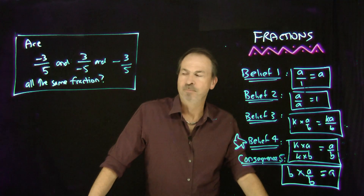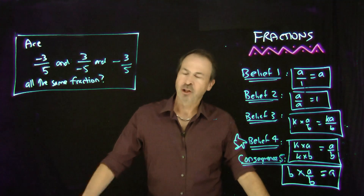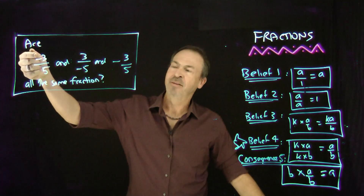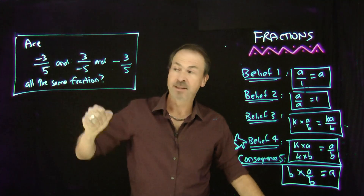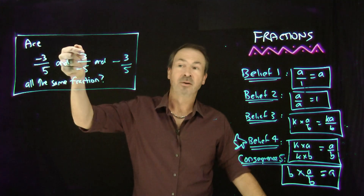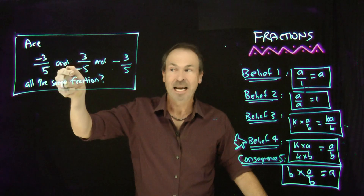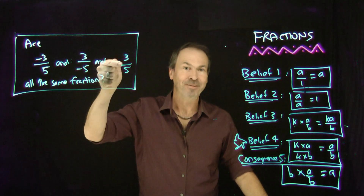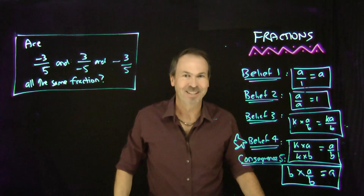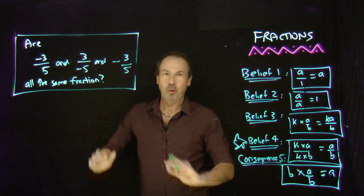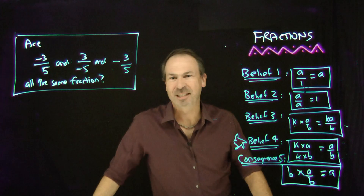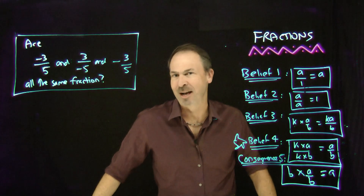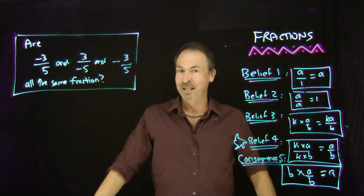Here's a question: are the fractions negative three-fifths, and three over negative five, and the negative of three-fifths — are those three quantities actually the same fraction in disguise, or are they different?